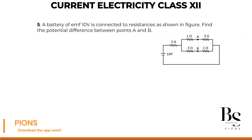A battery of EMF 10 volt is connected to resistances as shown in the figure. Find the potential drop between points A and B — the potential difference between points A and B.